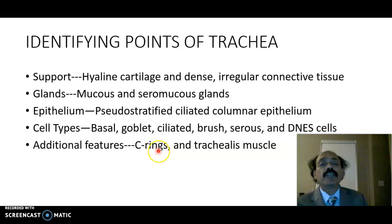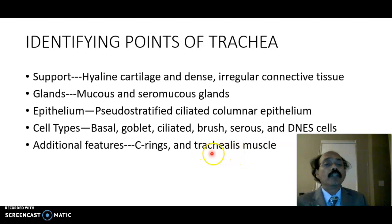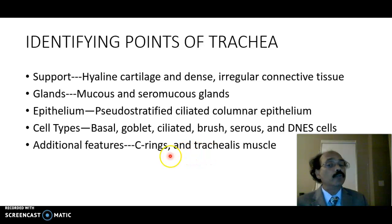The C-rings are composed of hyaline cartilage and the trachealis muscle. The trachealis muscle is a smooth muscle — each muscle cell looks like a spindle with a nucleus inside it. It is innervated by the recurrent laryngeal nerve, and it connects the two ends of the C-shaped hyaline cartilage rings.